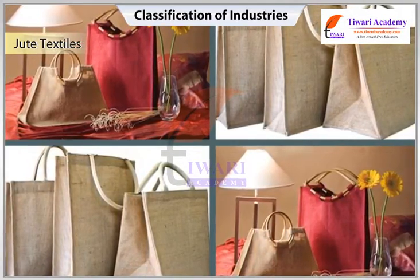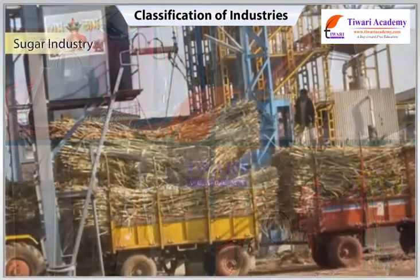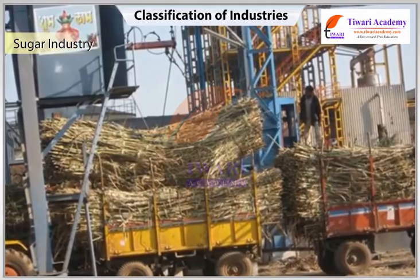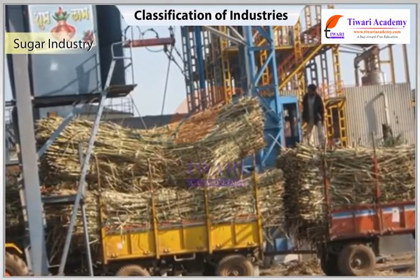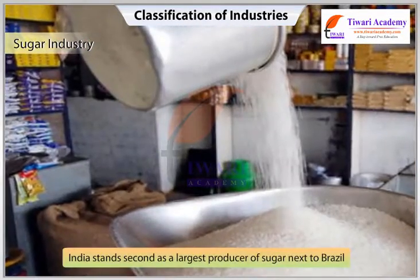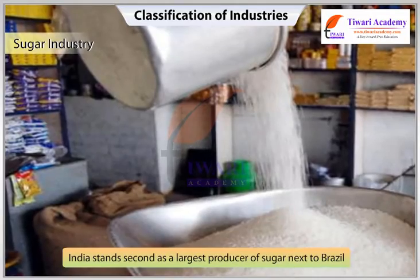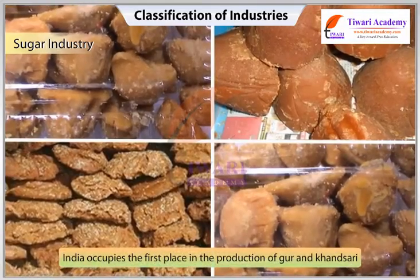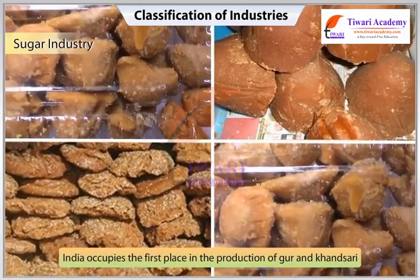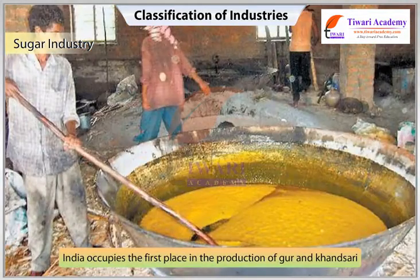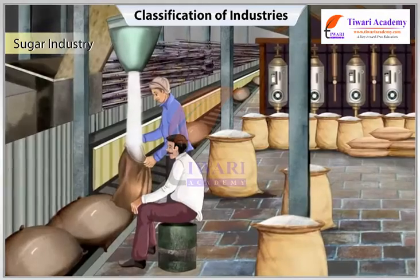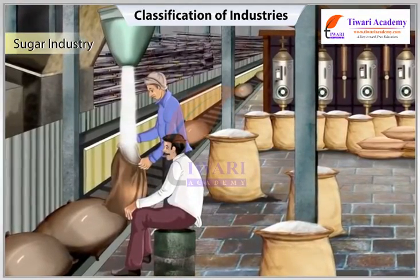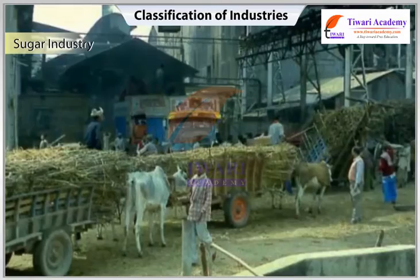However, internal demand for jute has been on the increase due to the government policy of mandatory use of jute packaging. Sugar industry: India has been known as the original home of sugar and sugarcane. India stands second as the largest producer of sugar after Brazil but occupies the first place in the production of gur and khandsari.